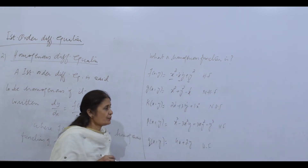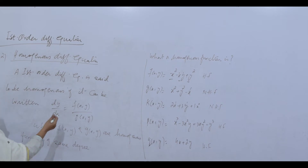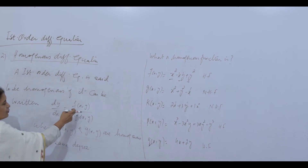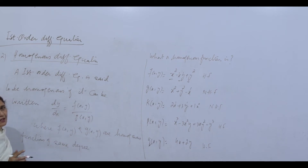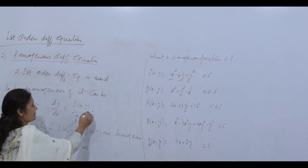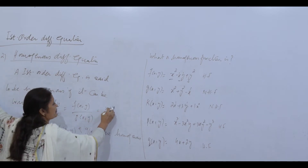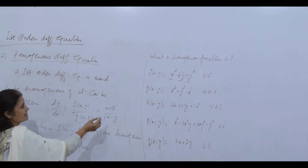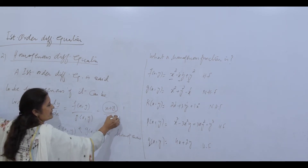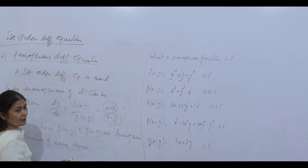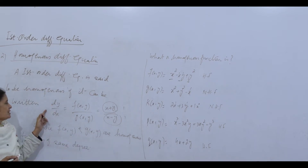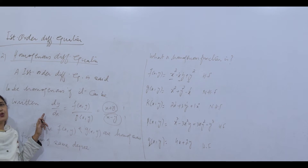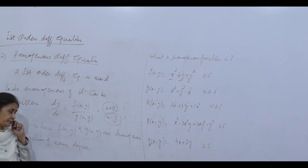If your differential equation is homogeneous, written as dy/dx = f(x,y)/g(x,y), and both numerator and denominator are homogeneous functions of the same degree — for example, (x + y)/(x − y), where both are homogeneous of degree 1 — then this is a first order homogeneous differential equation.